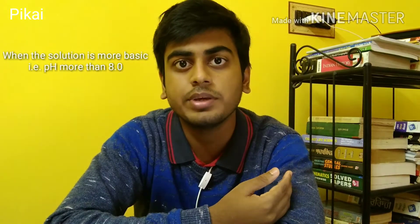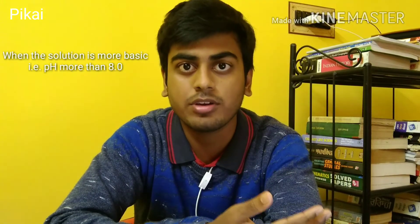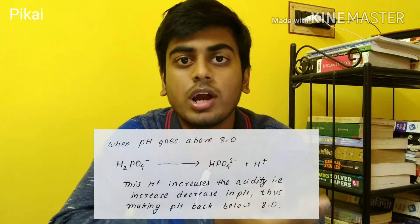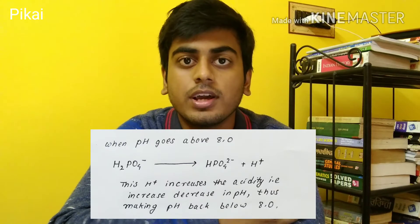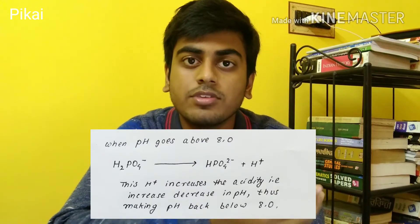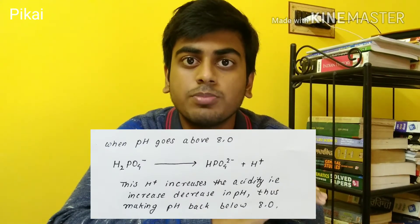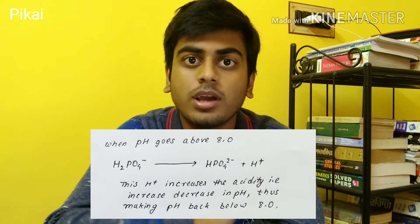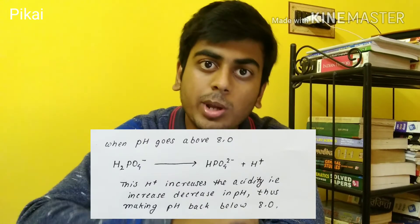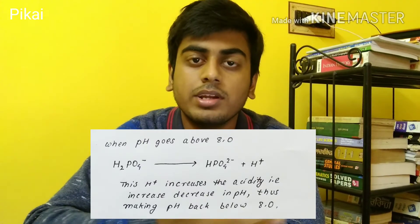When the condition is too basic, meaning the pH has gone above 8.0, the dihydrogen phosphate releases its H+ and forms monohydrogen phosphate. This released H+ confers acidity, decreasing the pH and putting it back below 8.0, thus maintaining the pH range between 5.8 to 8.0.